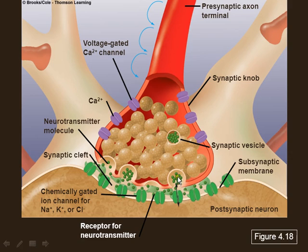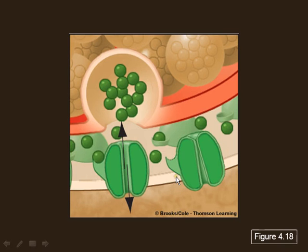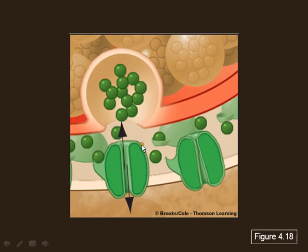Calcium partially depolarizes the terminal, but it also sticks to the vesicles and pulls them down to the membrane for exocytosis. This vesicle blends with the membrane and pushes the particles out. Once these particles are in the synapse, they move by their own energy — no energy required from outside. They go from high concentration to low concentration by diffusion.